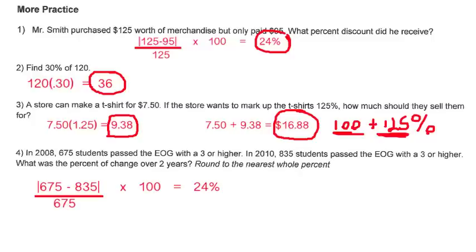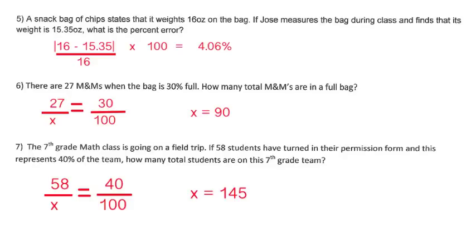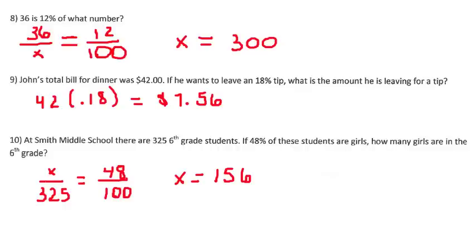Number four, it says round to the nearest whole percent. So if you round to the nearest whole percent, your answer should be 24%. Number five, your answer should be 4.06. Number six, your answer should be 90. And number seven, your answer should be 145. The answer to number eight is 300. The answer to number nine is $7.56. And the answer for number 10 is 156.